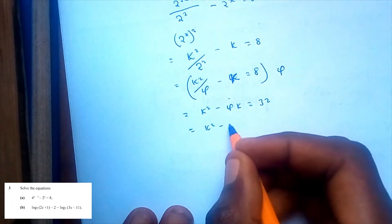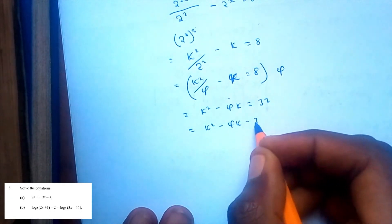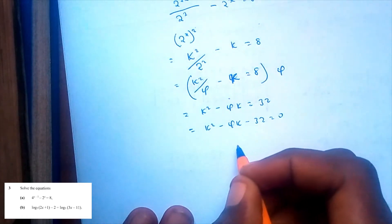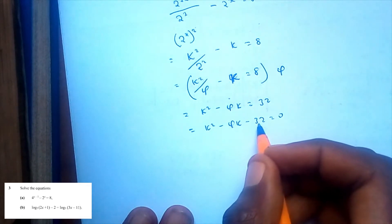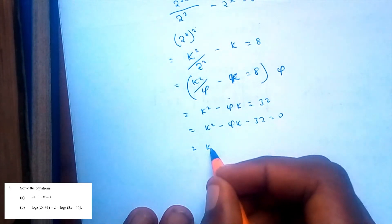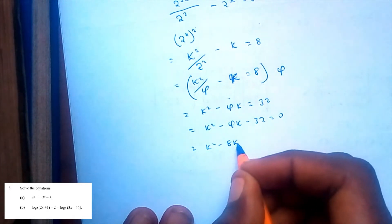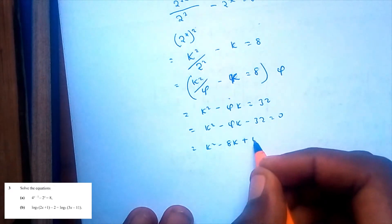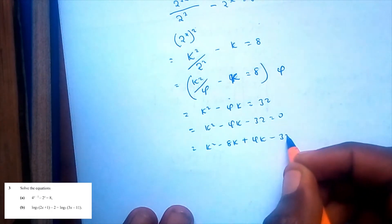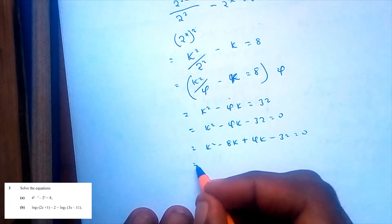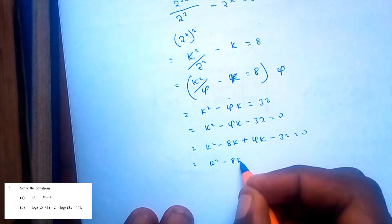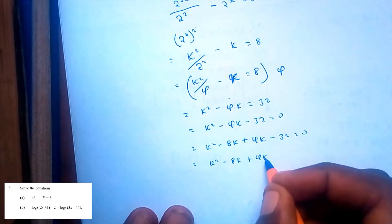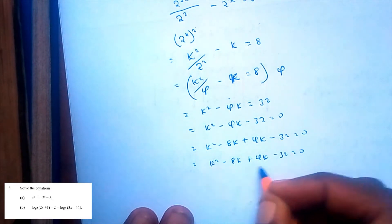So this would be k squared minus 4k minus 32 is equal to 0. What two numbers add to give 4 but multiply to give negative 32? That would be k squared minus 8k plus 4k minus 32 is equal to 0.